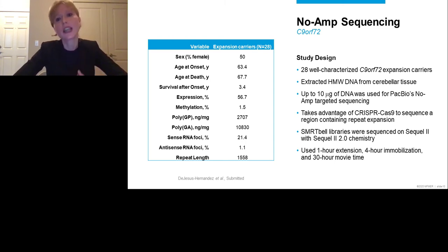And therefore, we decided to look at a larger number of individuals. And we used one specific technique, no-amp sequencing, developed by PacBio. For this study, we investigated 28 well-characterized C9ORF72 expansion carriers. And their characteristics are shown in the table on the left. As you can see, 50% female, an age at onset around 63 years. And we obtained a lot of detailed information about the expression levels of C9ORF72, about the methylation levels of the C9ORF72 promoter, about the levels of dipeptide repeat proteins, RNA foci, and the repeat length based on southern blot estimates. We extracted high molecular weight genomic DNA from the cerebellum using the recoveryase kit from Agilent. And up to 10 micrograms of DNA was used for each sample on one SMRT cell on the Sequel II platform. And we used a CRISPR-Cas9-based method to excise the area of interest.